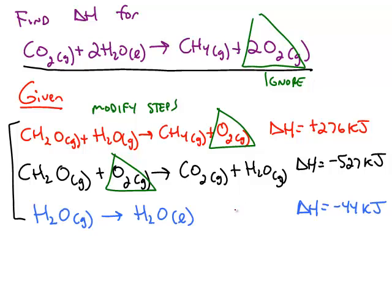We can use a chemical such as carbon dioxide in this example, because the only place carbon dioxide shows up is in step number two. Once we find a chemical that only shows up in one step, that chemical is going to tell us what to do with that particular step.